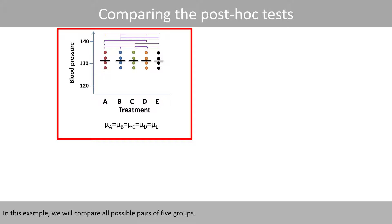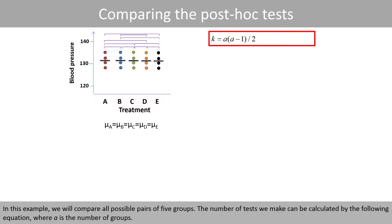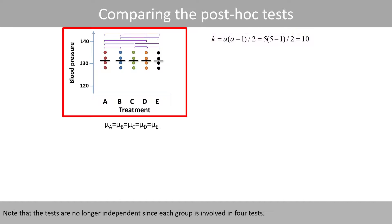In the next example, we'll compare all possible pairs of five groups. The simulations are performed based on the fact that the null hypothesis is true, meaning all groups have the same mean. The number of tests we can make is calculated by the equation where A is the number of groups. We see that we can make ten pairwise comparisons if we have five groups. Note that the tests are no longer independent, since each group is involved in four tests — for example, group A is compared to B, C, D, and E.